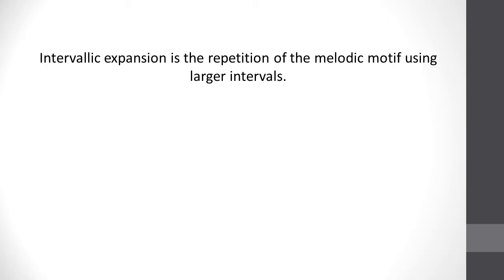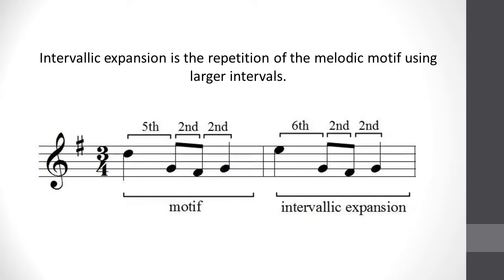Here is an example. As you can see, the melodic motif in the first measure consists of a fifth followed by two seconds. The repetition of the motif in the second measure is an Intervallic Expansion of the motif since the interval of a fifth has been expanded to a sixth.